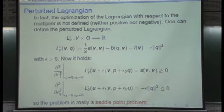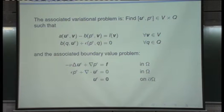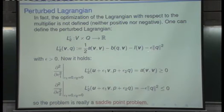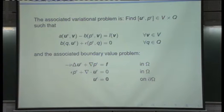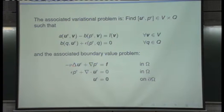Let me indicate what we have. First, the original problem is either the optimization of J in the divergence-free space, or the optimization with the Lagrange multiplier. These problems are equivalent. To introduce the restriction, we stated the optimization of the penalized Lagrangian L1_epsilon, introducing the restriction through penalization. Here, we regularize the Lagrangian and optimize L2_epsilon. These two boundary value problems are equivalent at the continuous level. However, when we approximate numerically, they will be different.